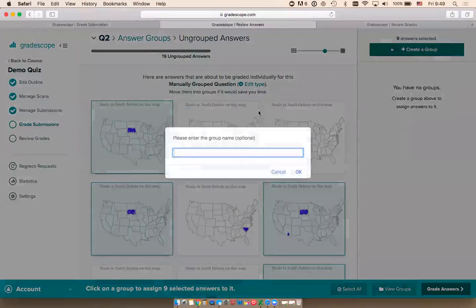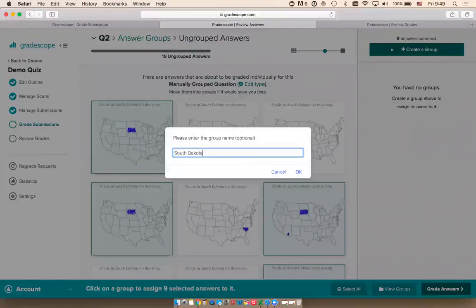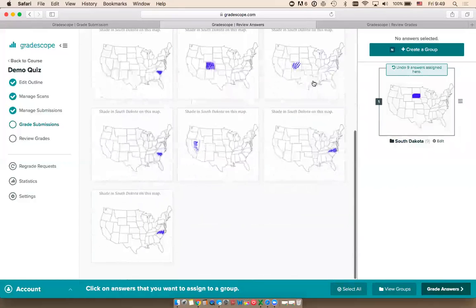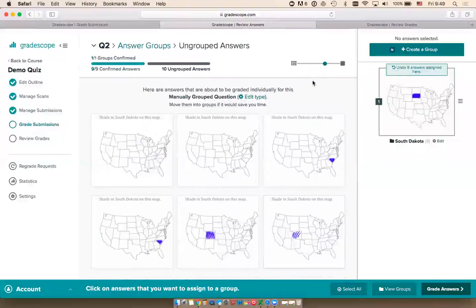I'm going to create a group and give it a name. Now I can see I'm going to be grading all nine students who correctly shaded South Dakota all at once. I can form more groups or just grade the rest of my answers individually. Even for more complex questions, a lot of instructors find it helpful to group all the correct answers first and then grade everything else one by one. That way you can spend more time grading the answers that need more effort and not spend time clicking and reusing feedback for the correct answers.